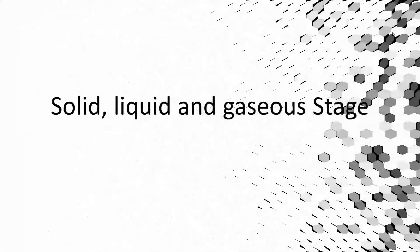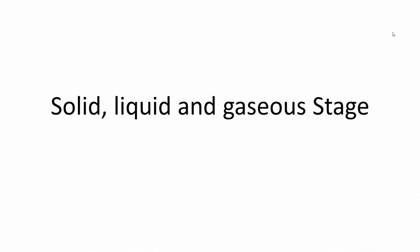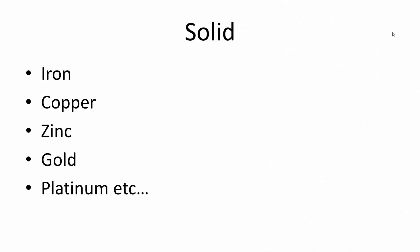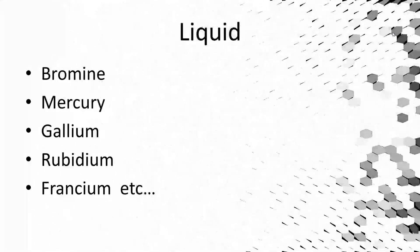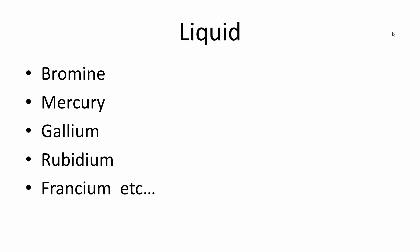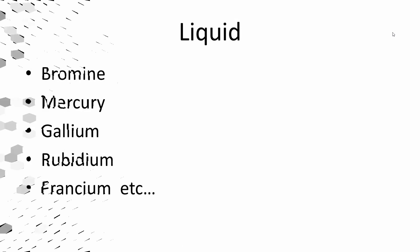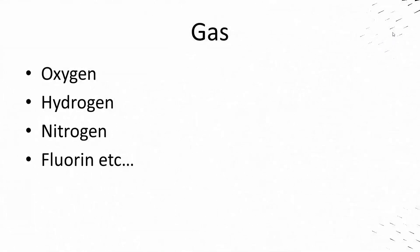This is the list of solid, liquid, and gaseous states. For liquids: Bromine, Mercury, Gallium, Rubidium, Francium, etc. For gases: Oxygen, Hydrogen, Nitrogen, Fluorine, etc. You can use these examples as well.